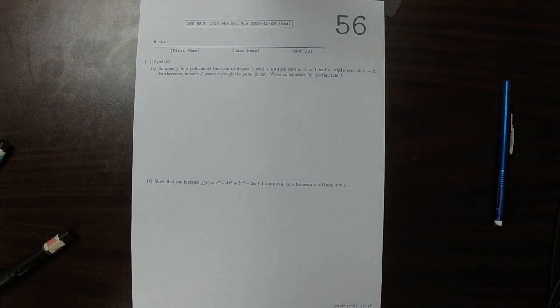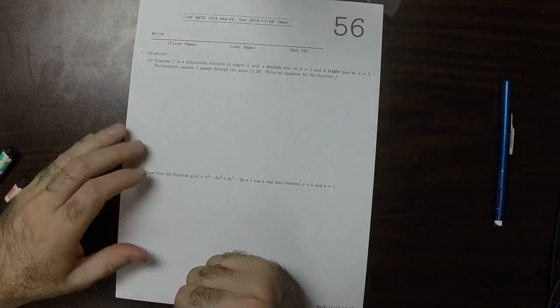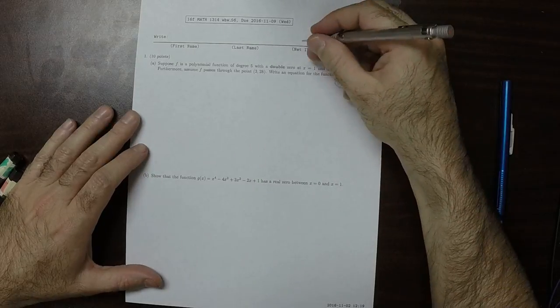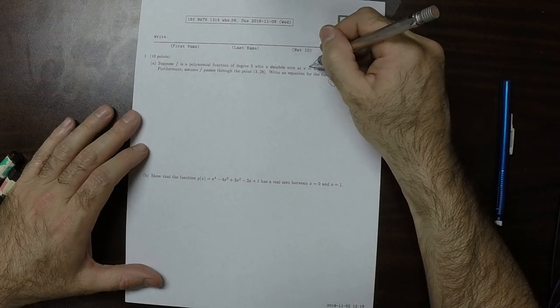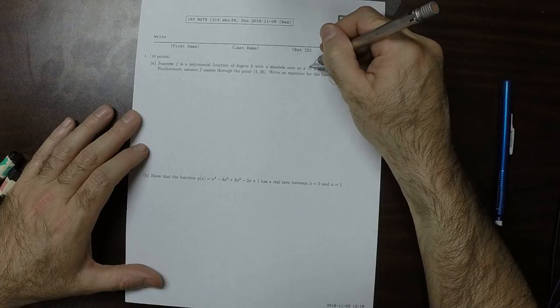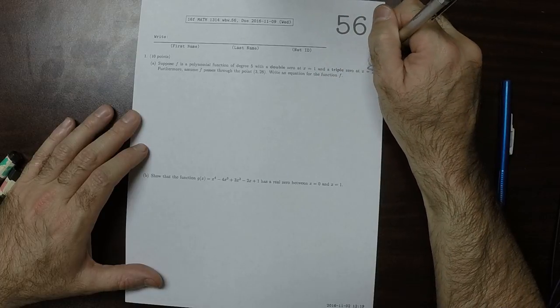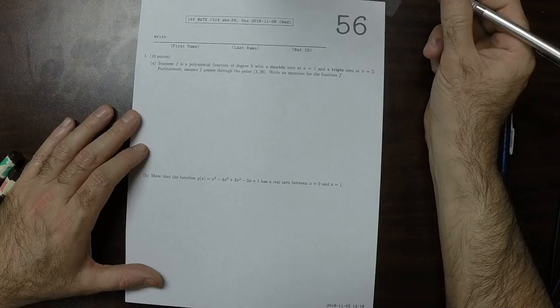This is the solution to written homework 56. What a double zero means is a zero of multiplicity 2. So 1 is a zero of multiplicity 2, and 2 is a zero of multiplicity 3.